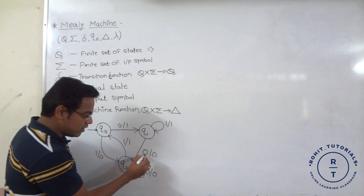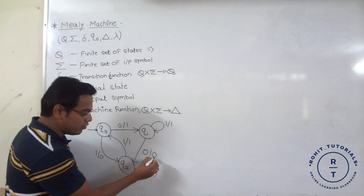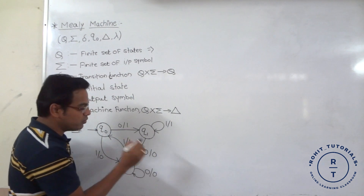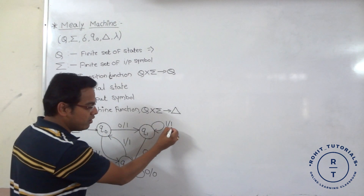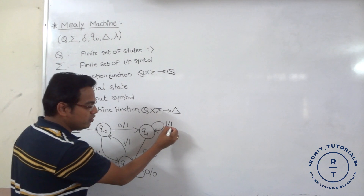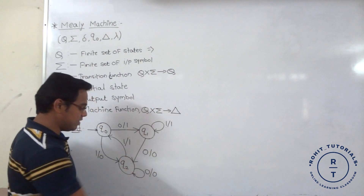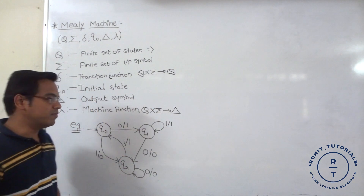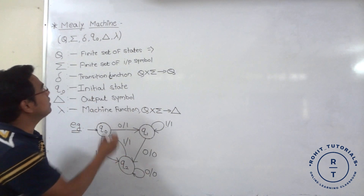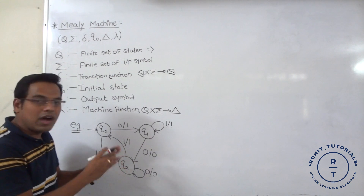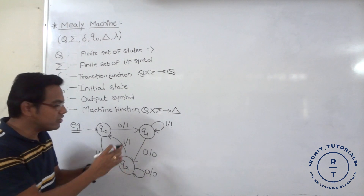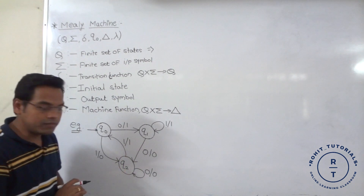So, 0 slash 0 — this is the input symbol, this is the output symbol. 1 slash 1 — 1 is input symbol, 1 is output symbol. So this is the representation of basic output representation of mille machine.